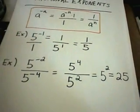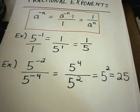So, 5 to the negative second over 5 to the negative fourth is just a fancy way of writing the number 25.